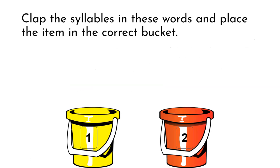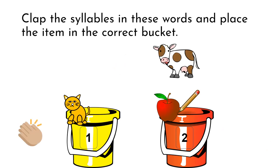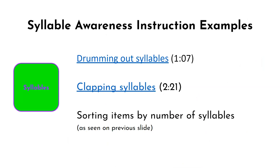Let's try the activity: clap the syllables in these words and place the item in the correct bucket. Cat. Apple. Pencil. Cow. Table. Here you'll find additional instructional examples related to syllable awareness. Two are videos of teachers working with children, and the other describes the sorting activity from the last slide.